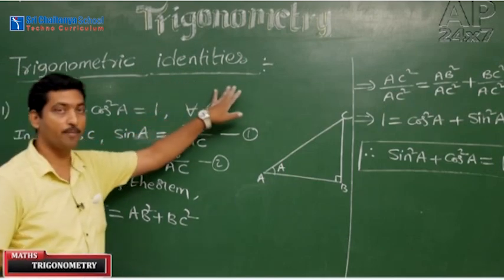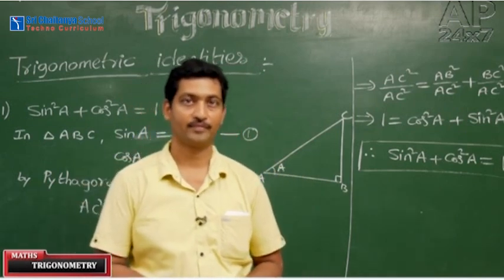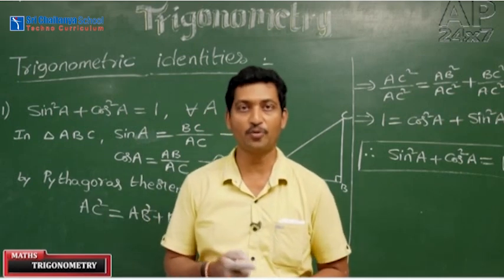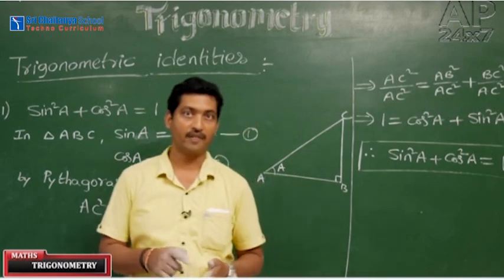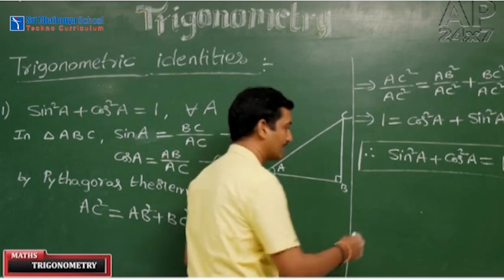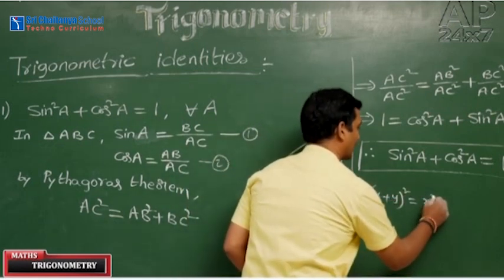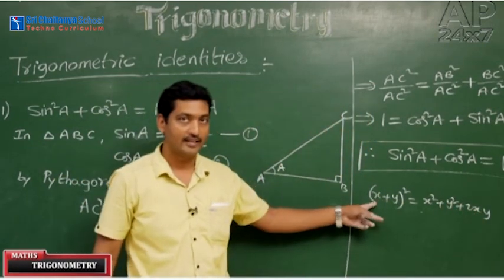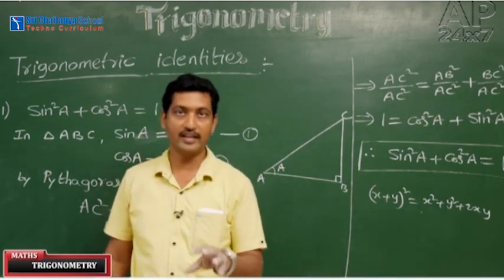Before going to trigonometric identities, what is meant by an identity? An identity is an equation which is true for all the values of the variables involving in it, for which the equation is defined. For example, (x + y)² = x² + y² + 2xy. Here, LHS is equal to RHS for all values of x and y.